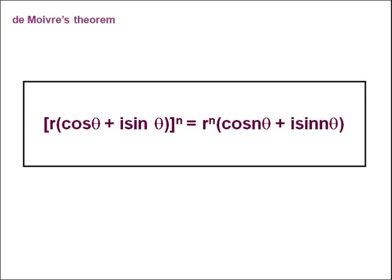De Moivre's theorem states that (r(cosθ + i·sinθ))ⁿ is the same as rⁿ multiplied by (cos(nθ) + i·sin(nθ)), i.e. the index n can be written as a coefficient of θ.